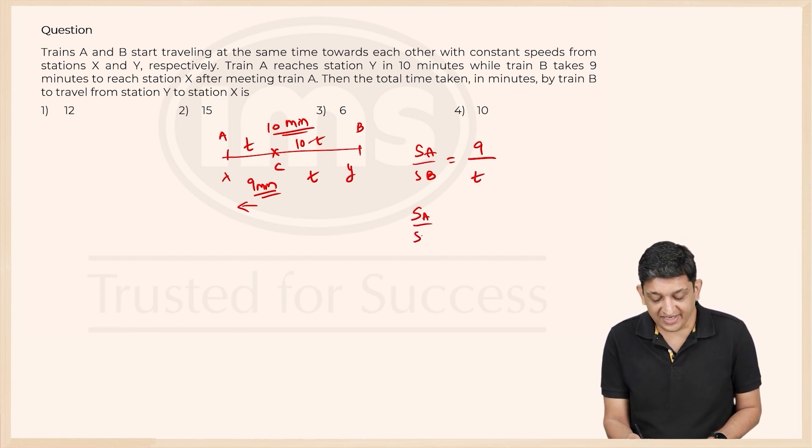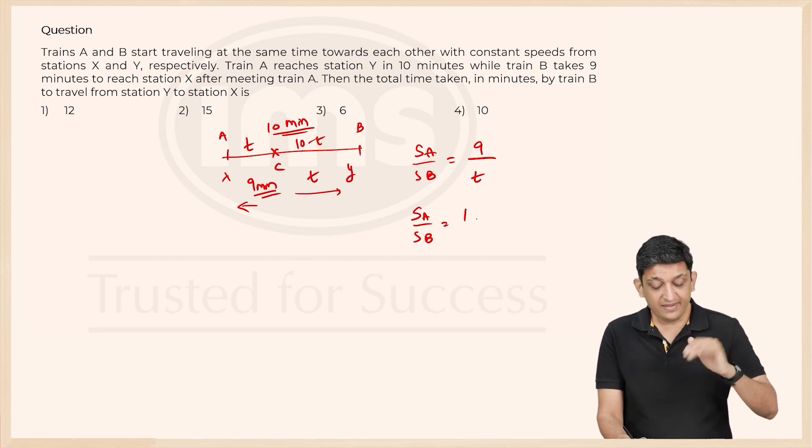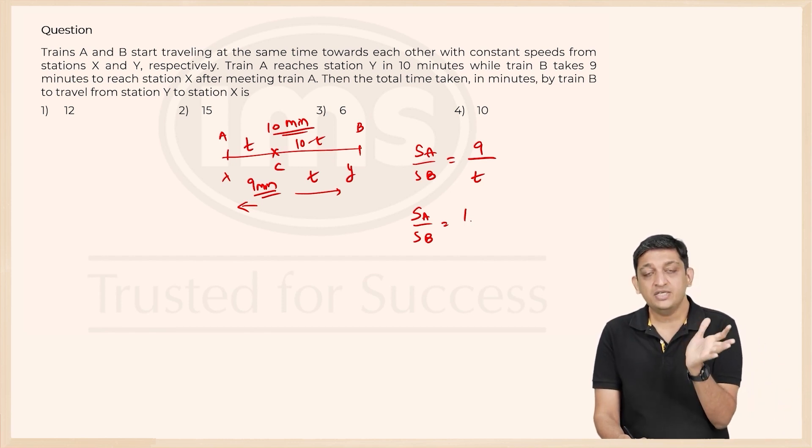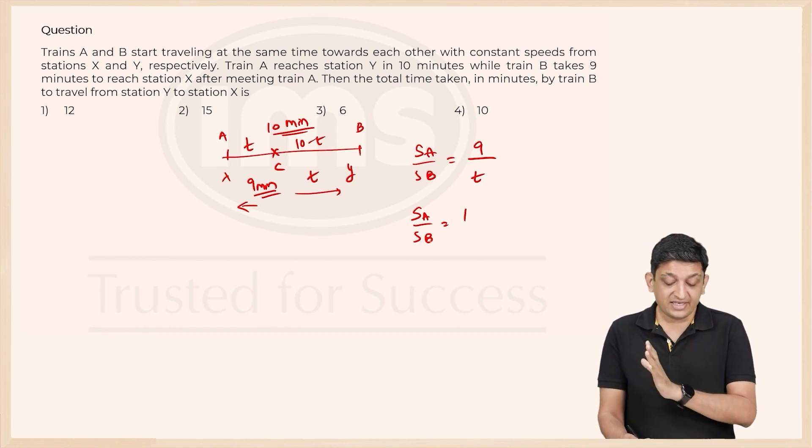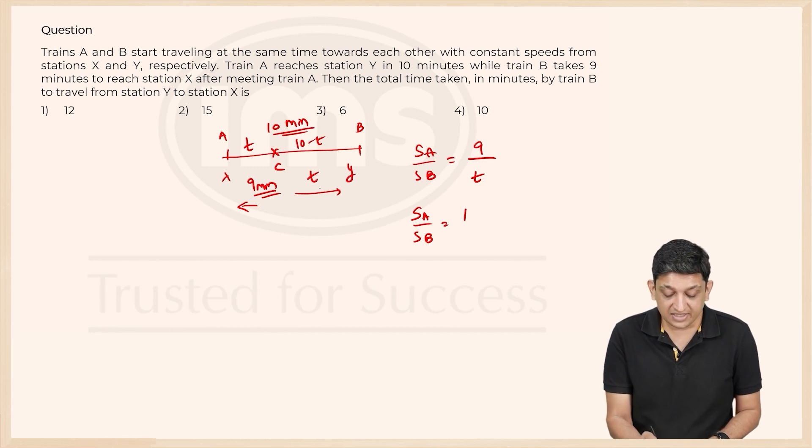Similarly, I can also say that SA upon SB for this part will be time taken by A to go from C to Y which is 10 minus T units, and time taken by train B to go from C to Y which is T units. But because this is inverse, when distance is constant, speed is inversely proportional to time. So SA upon SB will be T divided by 10 minus T.